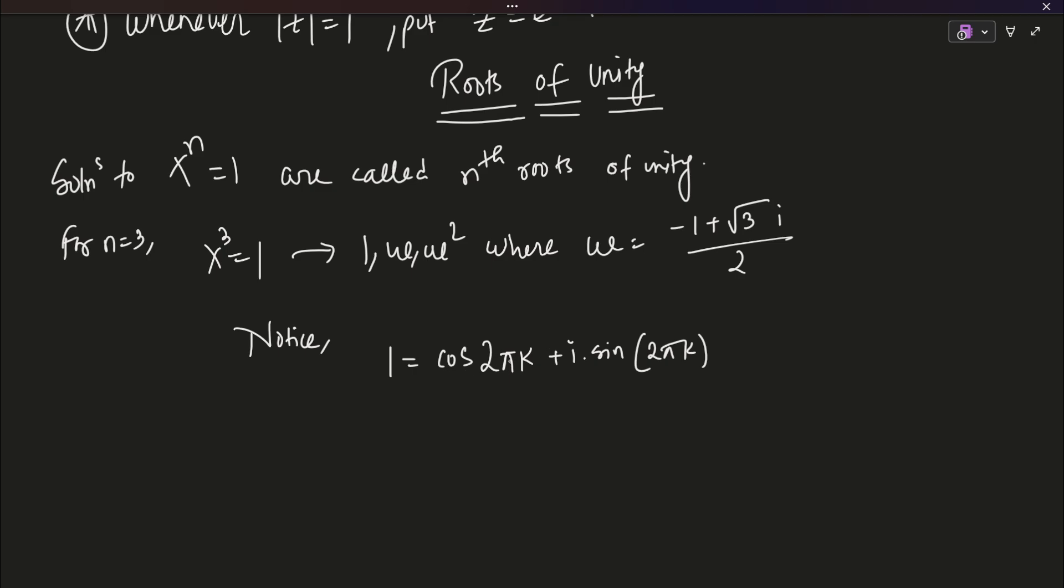Basically cos 2 pi is 1, cos 0 is 1, cos of minus 2 pi is 1, everything. And any multiple of pi, any integral multiple of pi inside sin would produce a 0, which means this part is non-existent. So, we can write one like this, which basically means we can write e to the power 2 pi k i according to Euler's formula.